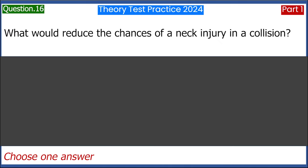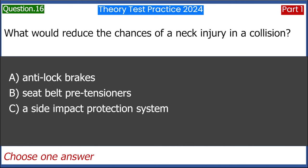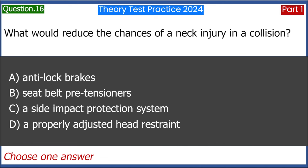What would reduce the chances of a neck injury in a collision? A. Anti-lock brakes. B. Seat belt pre-tensioners. C. A side impact protection system. D. A properly adjusted head restraint. Answer: D. A properly adjusted head restraint.